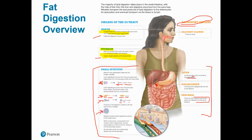Now we have the concept of a micelle. We take all the end products of fat digestion — all these building blocks — and package them in the lumen of the small intestine. Combined with some bile components, they form larger globules called micelles. A micelle is basically a package of free-floating fat components. The enterocytes — the cells lining the small intestine — absorb the micelles, which then dissociate inside the enterocyte.